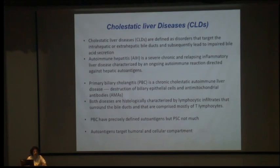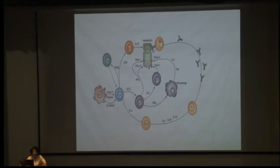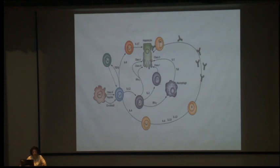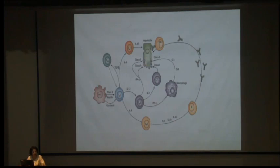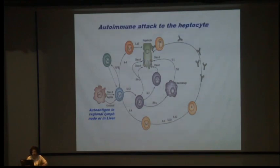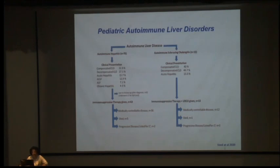Regarding the type of T cell infiltration: self-antigen presented by APCs activates uncommitted TH0 cells, which become either TH1 or TH2. TH1 cells under IL-2 and interferon-gamma influence interact with macrophages or become CTLs causing hepatocyte damage. TH2 cells — CD4 cells — increase IL-4, IL-10, and IL-13, driving B cell maturation into autoantibody-producing cells targeting NK cells, which then damage hepatocytes.